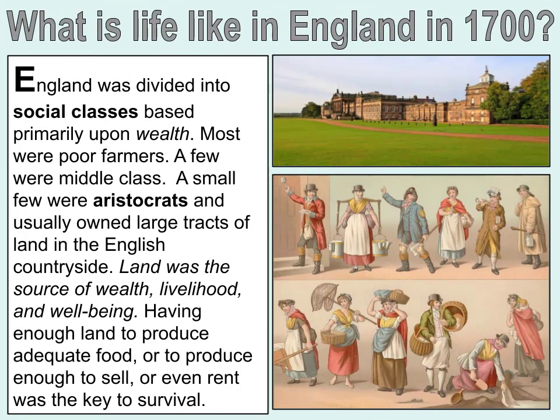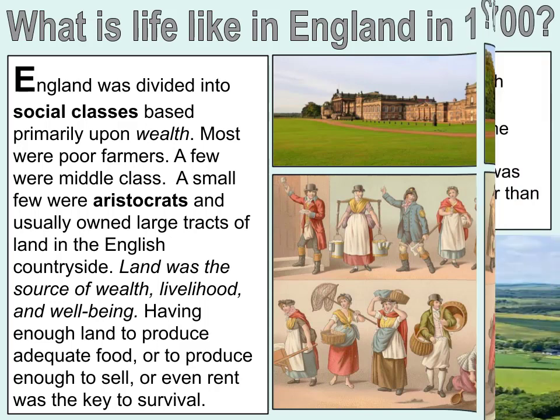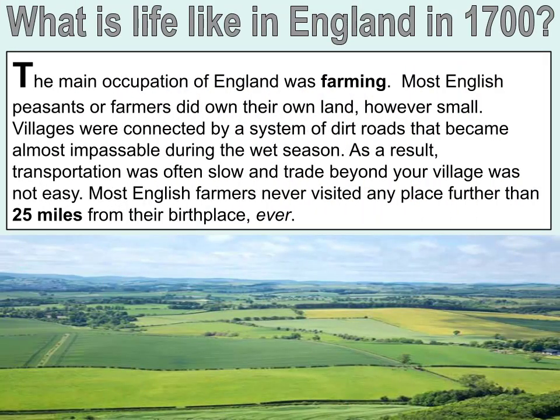England was divided into social classes based primarily upon wealth. Most were poor farmers, a few were middle-class, and a small few were aristocrats who usually owned large tracts of land in the English countryside. Land was the source of wealth, livelihood, and well-being. Having enough land to produce adequate food or to sell or even rent was the key to survival. The main occupation of England was farming. Most English peasants or farmers did own their own land, however small. Villages were connected by a system of dirt roads that became almost impassable during the wet season. As a result, transportation was often slow and trade beyond your village was not easy. Most English farmers never visited any place further than 25 miles from their birthplace.